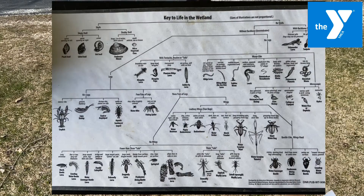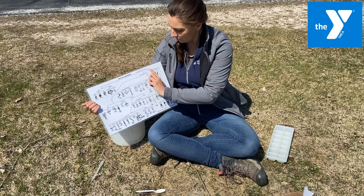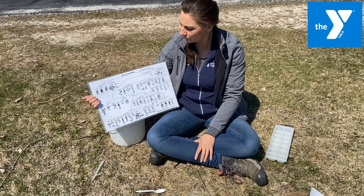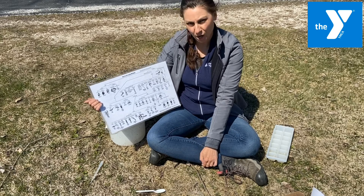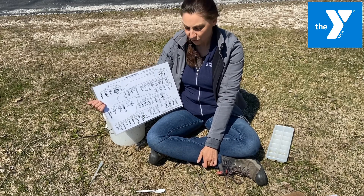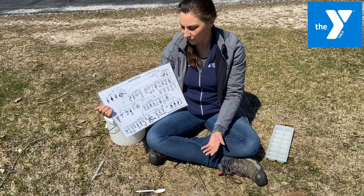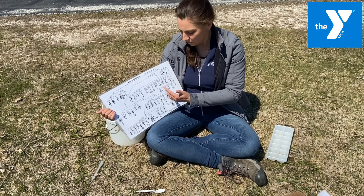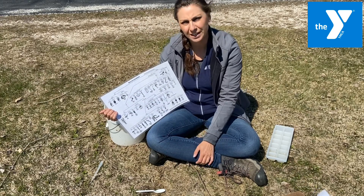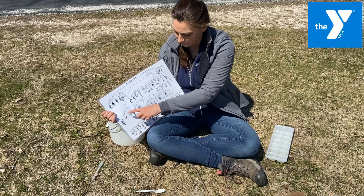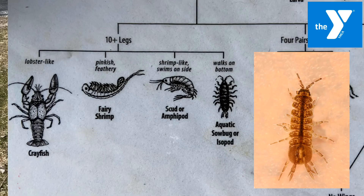You always start at the top of a dichotomous key. There are usually two questions. The first question: does it have no shell or does it have a shell? We decided that ours does not have a shell, so we follow that line to the next question: is it without a backbone or does it have a backbone? Most of the critters we're going to see in our wetland will not have a backbone, so they're macroinvertebrates — big enough to see with your eye, but no backbone. The next question: does it have legs or no legs? We've already determined it has more than 10 legs. So next: more than 10 legs or three pairs of legs — that's six. We're going to go here because we know it has more than 10 legs.